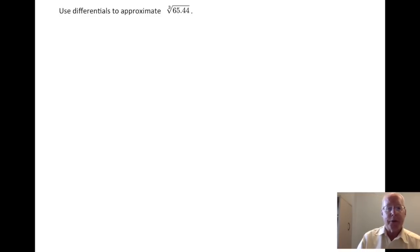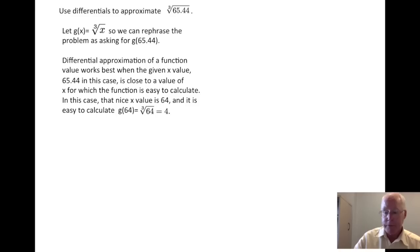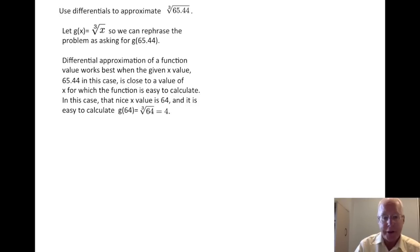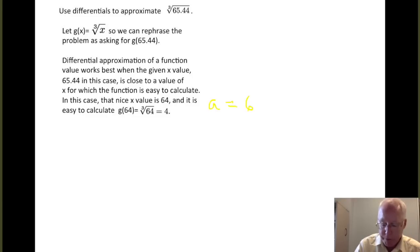Let's take a look at an example of how this can work out in practice. We're going to use differentials to approximate the number cube root of 65.44. So we need a function to work with — we're working with a cube root — so we're going to take as our function g of x equals the cube root of x. We can rephrase the problem: we want to find g of 65.44. Differential approximation of a function value works best when the given x value, 65.44, is close to a value for the function where it's easy to evaluate. That nice x value is 64. We're going to take a equal to 64, and compute g of a is g of 64, which is the cube root of 64, and turns out to be 4.